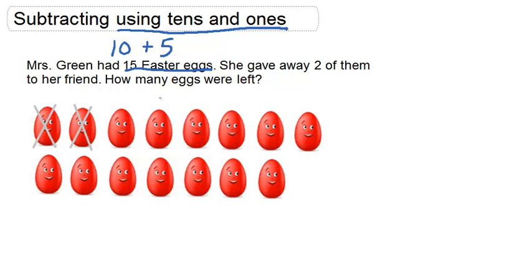Okay, that's using tens and ones. So we can show this on the diagram below by circling 5 eggs and making another group of 10 eggs.